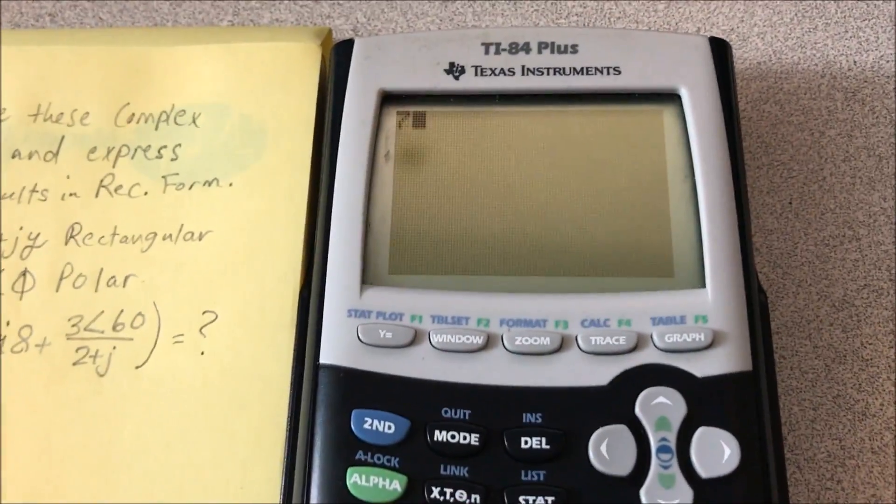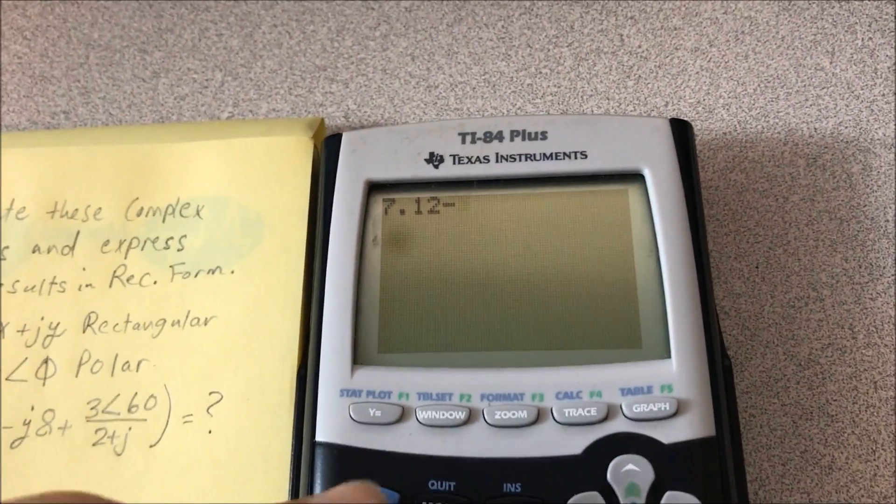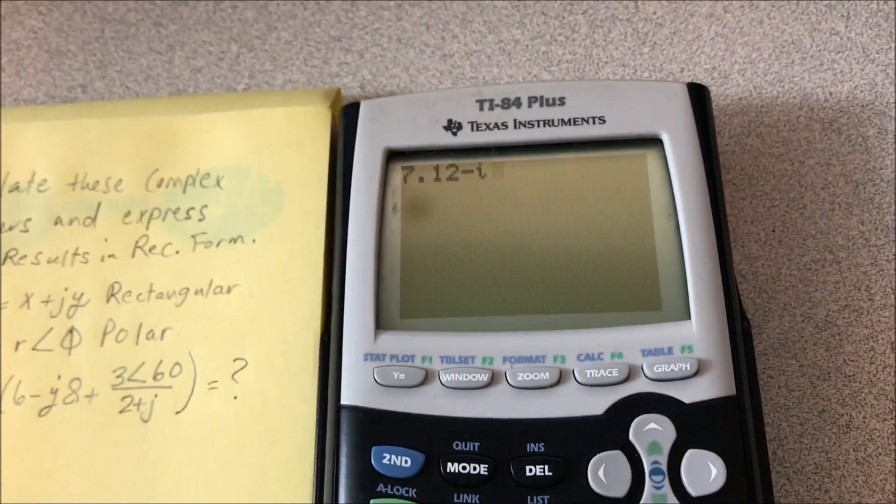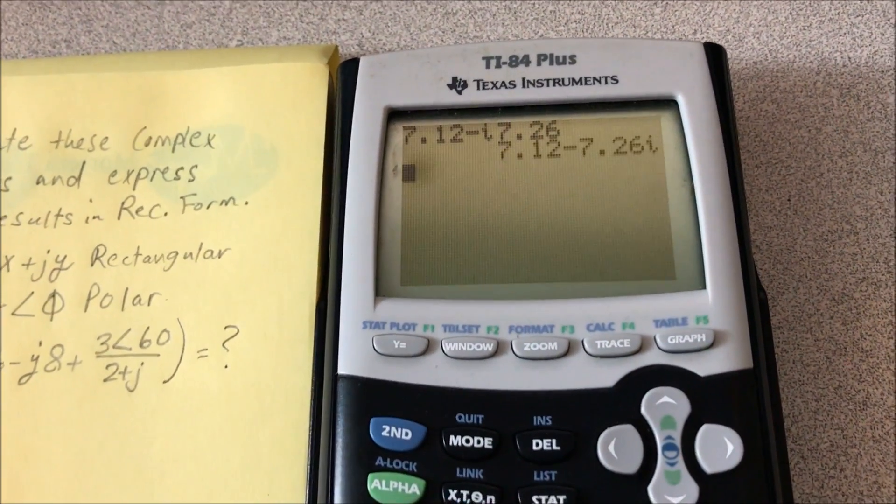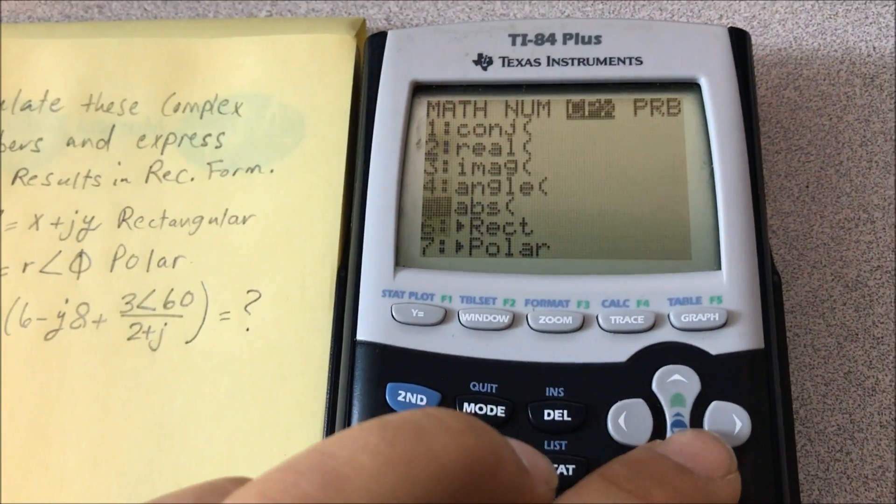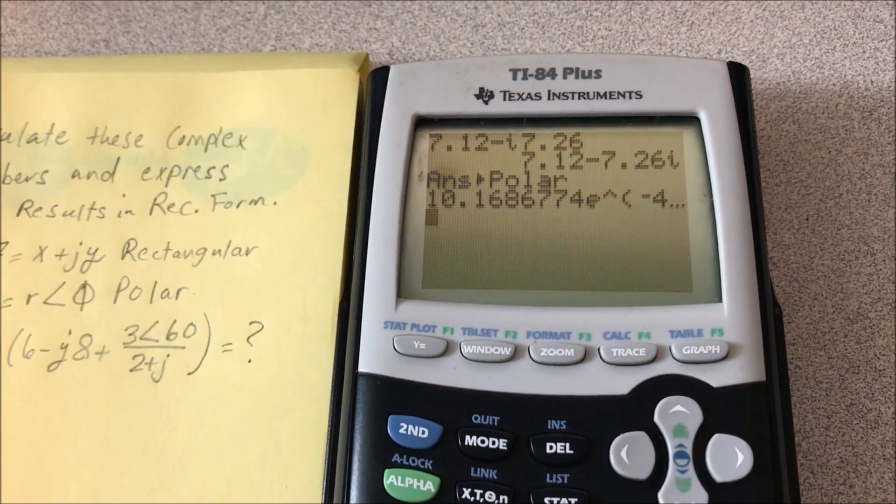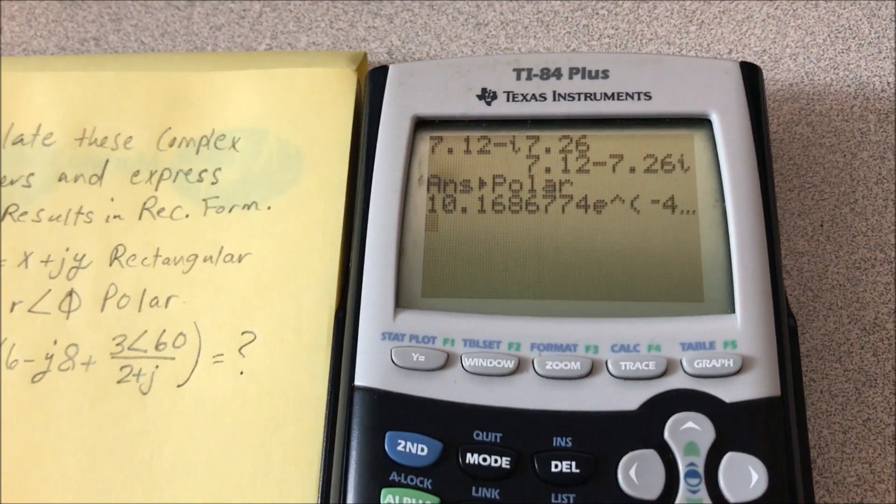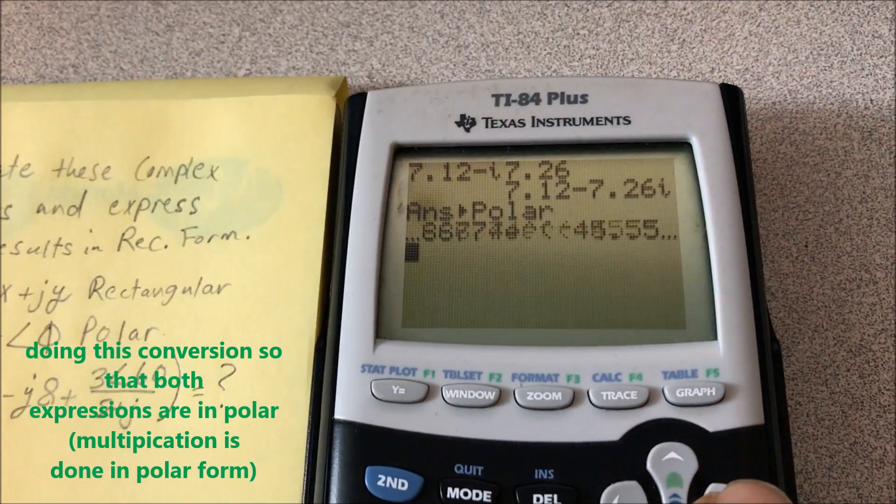So now we're going to be converting the 7.12 minus j7.26. You're going to go back into math, complex, and then you're going to turn that into polar, which will get you 10.16, and the angle is negative 45.6.